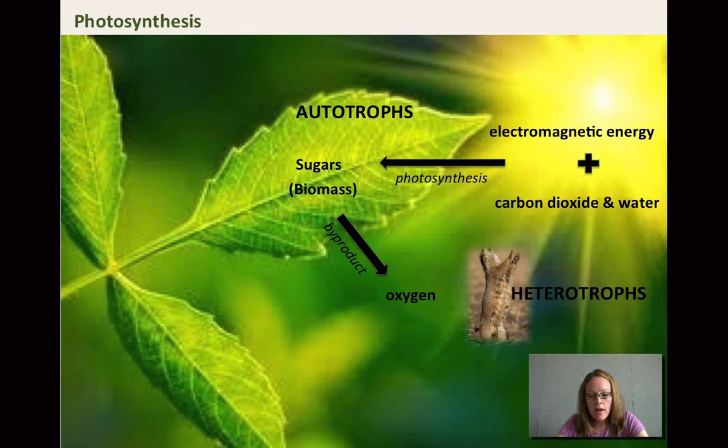So just an overview on photosynthesis. First, we need light, so electromagnetic energy from the sun, the carbon dioxide like we just talked about, and then also water. That water is a key component in the first light reaction.